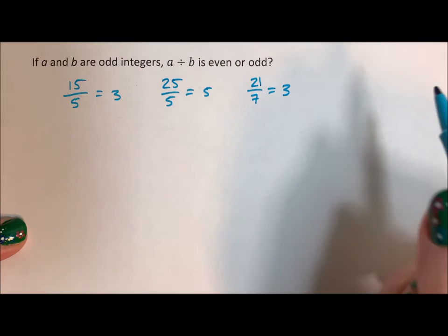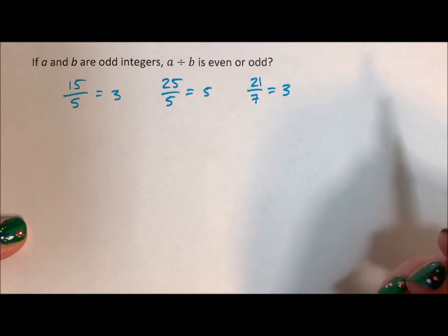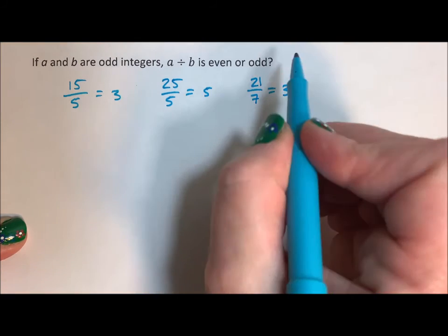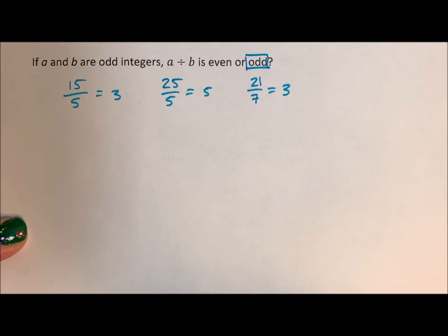I see a pattern. If A and B are odd integers, then their quotient when you divide them, it's odd.